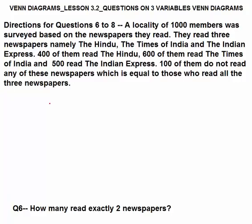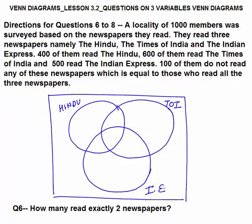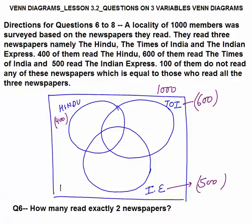Directions for questions 6 to 8 — pause the video and try to solve yourself first. A locality of 1000 members was surveyed on newspapers they read: The Hindu, Times of India, and Indian Express. Total = 1000. The Hindu circle = 400, TOI = 600, Indian Express = 500. 100 do not read any newspaper (outside the circles), and 100 read all 3 newspapers.